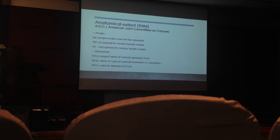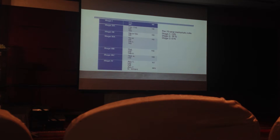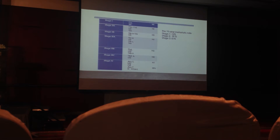The AJCC also describes nodal involvement. N1 is spread to nearby lymph nodes, with N1A, N1B, and N1C classified according to the size of the metastasis. Summarizing stages 1 through 4: the important message is that with every increased stage, there is approximately a three-quarters increase in mortality rate.